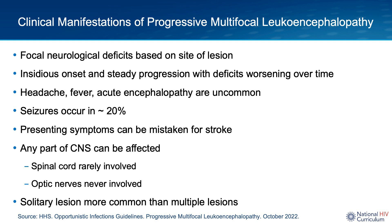On occasion, presenting symptoms due to focal brain lesions may be mistaken for a stroke, but the progressive nature of the disease should point away from a stroke diagnosis. PML can affect any part of the central nervous system except the spinal cord and optic nerves. Typically there is one lesion driving the symptoms, but multiple lesions can occur.